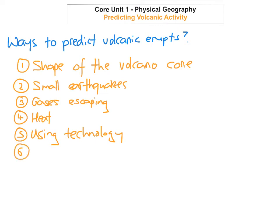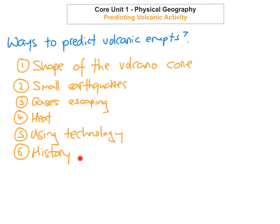The sixth way is by looking at the history of eruptions. Scientists are now much better at being able to interpret past records of eruptions, and they use this to predict the likelihood of a new eruption. They study the history of volcanoes in detail and try to predict when the next eruption may occur based on historical events. One of the reasons this became important was after Mount St. Helens in 1980 — that was really the first time that studying the history of volcanoes came to fruition.